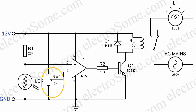The preset variable resistor RV1 sets the reference voltage to compare with the LDR voltage, so it can be used to adjust the sensitivity of the circuit. A comparator is made using LM358 op-amp, which is used to compare the LDR voltage and reference voltage.